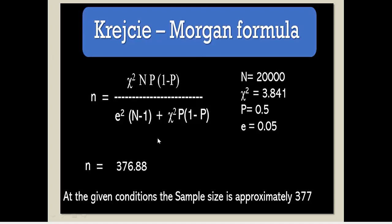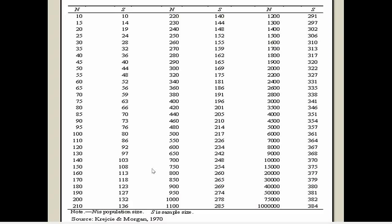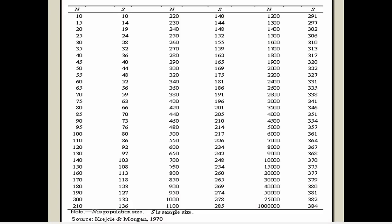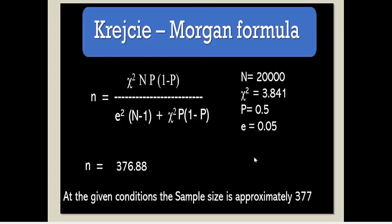Now we will cross-check this answer with the Morgan table. Our question is: if the population is 20,000, what does the Morgan table give? Through the formula our result is 376. Looking at the Krejcie and Morgan table for a population of 20,000, the sample size is 377. The formula gives 376.88, which is approximately 377. This confirms that the table results match the formula. Therefore, without using any formula or calculation, you can directly refer to the Krejcie and Morgan table to easily determine your sample size.